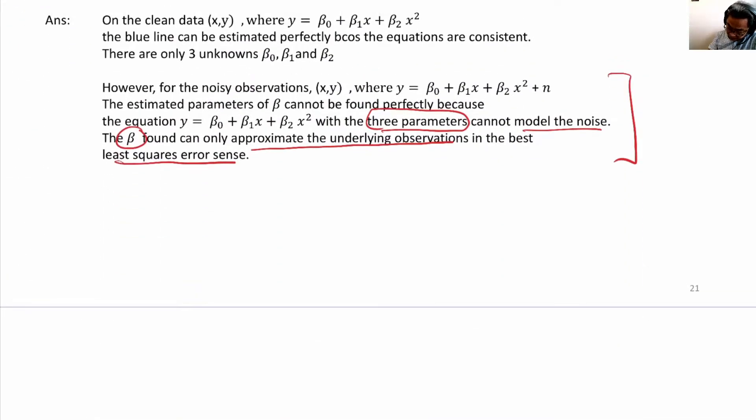The reason is this: the noisy case is the equation originally plus the noise. This generates a system of inconsistent equations. When we solve for the betas, the system of equations is inconsistent, so we cannot get the perfect beta to model this because of this random noise. What we found—β₀, β₁, β₂—are the best parameters in the least squares error sense to approximate the problem. That's all, thank you.